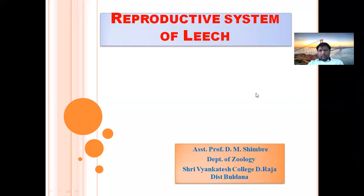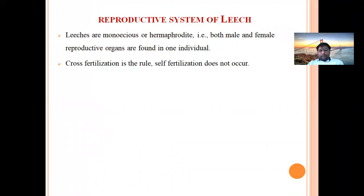In this video we are going to discuss the female reproductive system in leech. Leeches are monoecious or hermaphrodites, meaning both male and female reproductive organs are found in one individual. Though they are hermaphrodites, self-fertilization does not occur — cross fertilization is the rule.